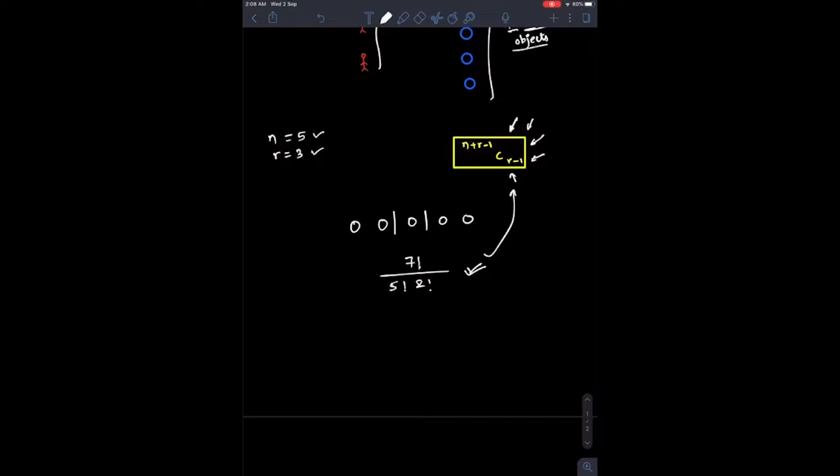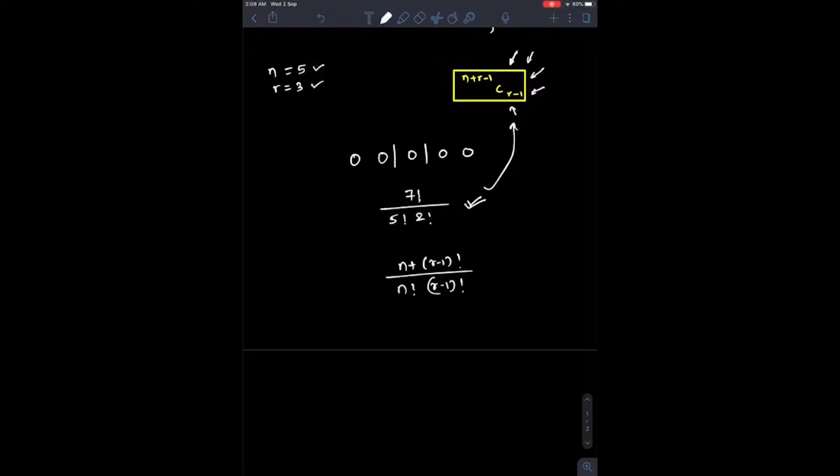Now this is what your answer is, and this is what this formula also states. How did we reach from here to this formula is that you had n plus r minus 1 sticks, so this factorial, and in the denominator you had this as n factorial into r minus 1 factorial. So making some manipulations, you would get n plus r minus 1 factorial divided by n plus r minus 1 minus r minus 1. So basically these two get subtracted.